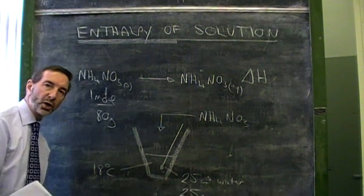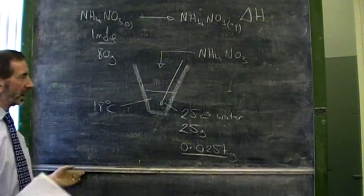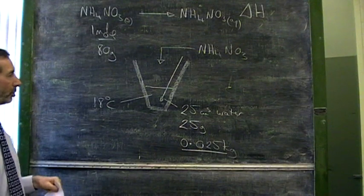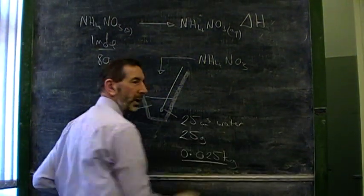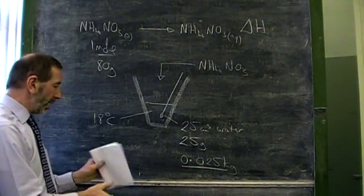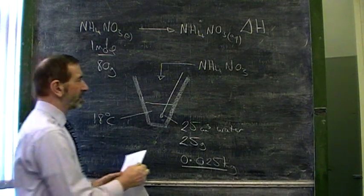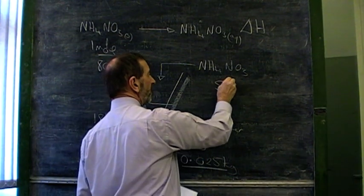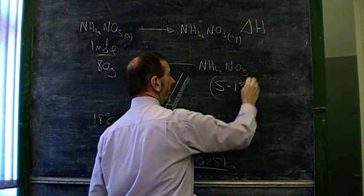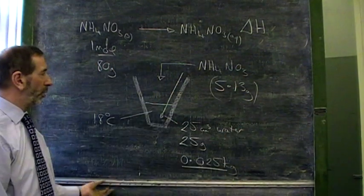So, instead of trying to dissolve all 80 grams in here, let's dissolve a fraction of a mole. Let's dissolve something like 5 grams. Now, I've got the results here from an experiment that was done recently, where someone dissolved 5.13 grams of ammonium nitrate in the water.